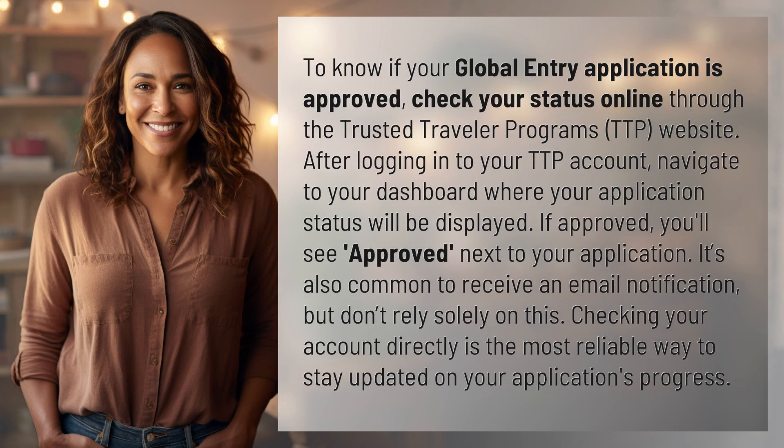To know if your Global Entry application is approved, check your status online through the Trusted Traveler Program's TTP website. After logging into your TTP account, navigate to your dashboard where your application status will be displayed.